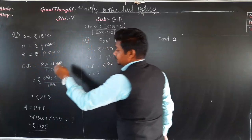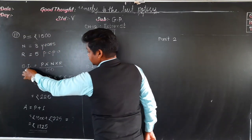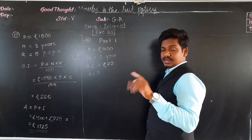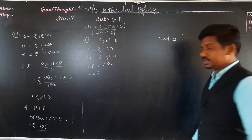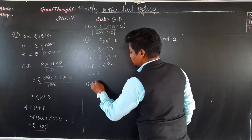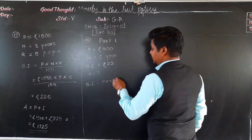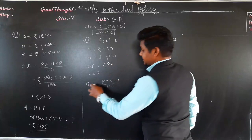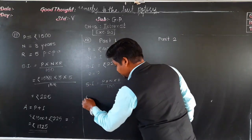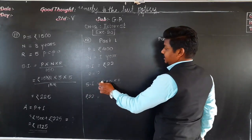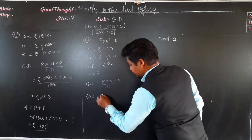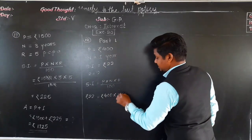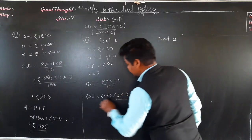The basic formula is: simple interest equals P into N into R upon 100. Substituting values: 22 equals 400 into 1 into R upon 100. The two zeros of 400 cancel with the two zeros of 100, leaving 4 into 1 into R in the numerator. So 22 equals 4R.